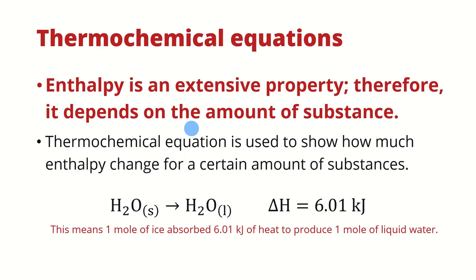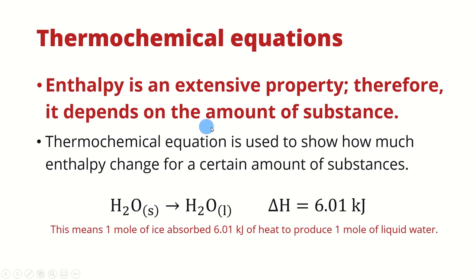Now that we know the heat of reaction, combining it with the chemical equation gives us what is called a thermochemical equation — a chemical equation that shows what heat is involved. Enthalpy is an extensive property, so it depends on the amount of substance used in the reaction. The thermochemical equation is used to show how much enthalpy change occurs for a certain amount of substance.